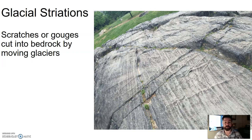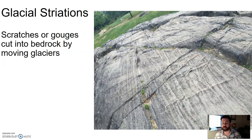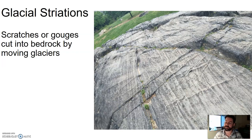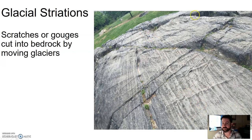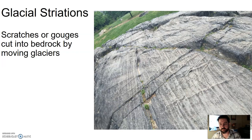Glacial striations. Glaciers move on average about 10 inches per day, and even though they're made of ice, they can carve through rock, stone, or straight through mountains like a hot knife through butter. As glaciers move over an area, they scratch and gouge it. Sometimes it smooths and polishes; sometimes it leaves long, big scratches. Those are called glacial striations. Millions of years ago, as the glacier crept over this area, it scraped and gouged out the rock underneath it — those are glacial striations.